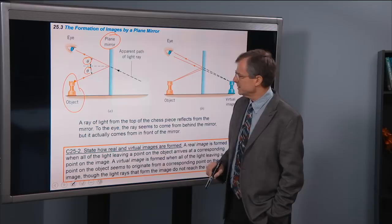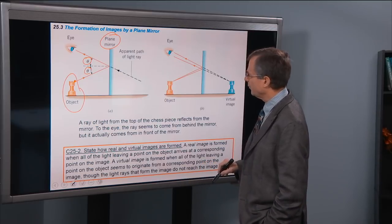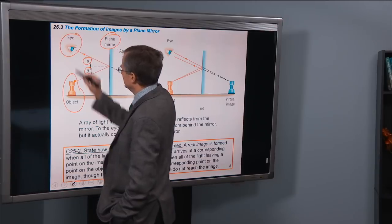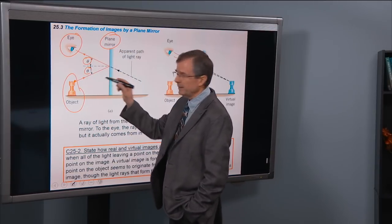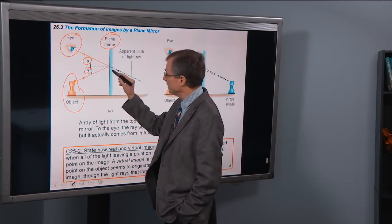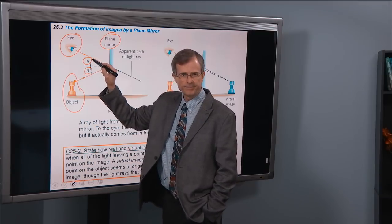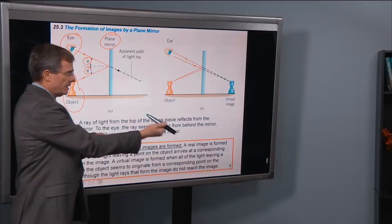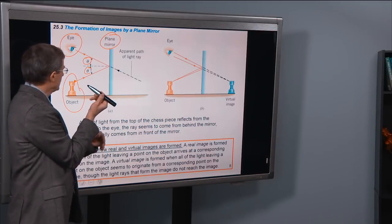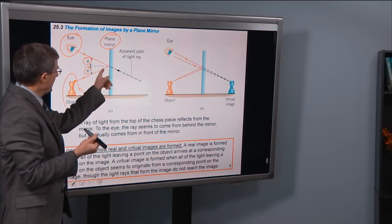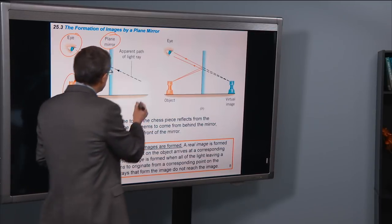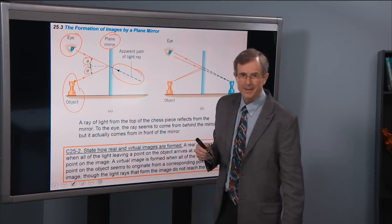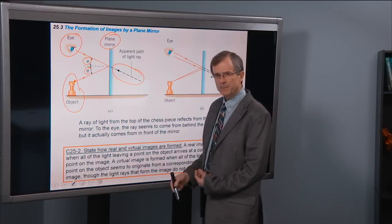So what happens as far as how we're going to form an image? If your eye is here, the light ray that your eye sees is the one shown here in red. From your eye's perspective, it's seeing that light ray come into it, and it's as if your eye perceives that the ray comes from behind the mirror. Where's the image formed?